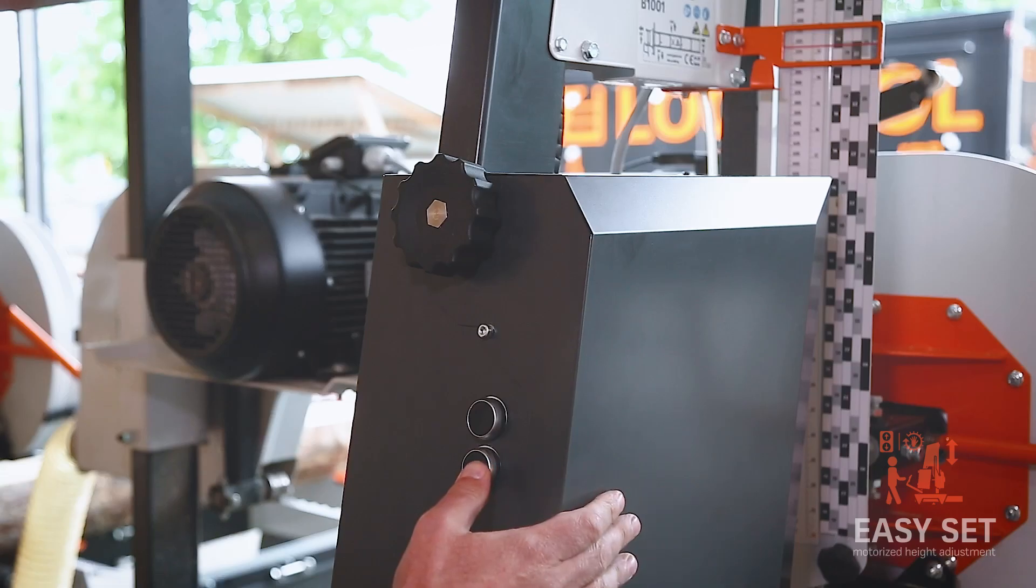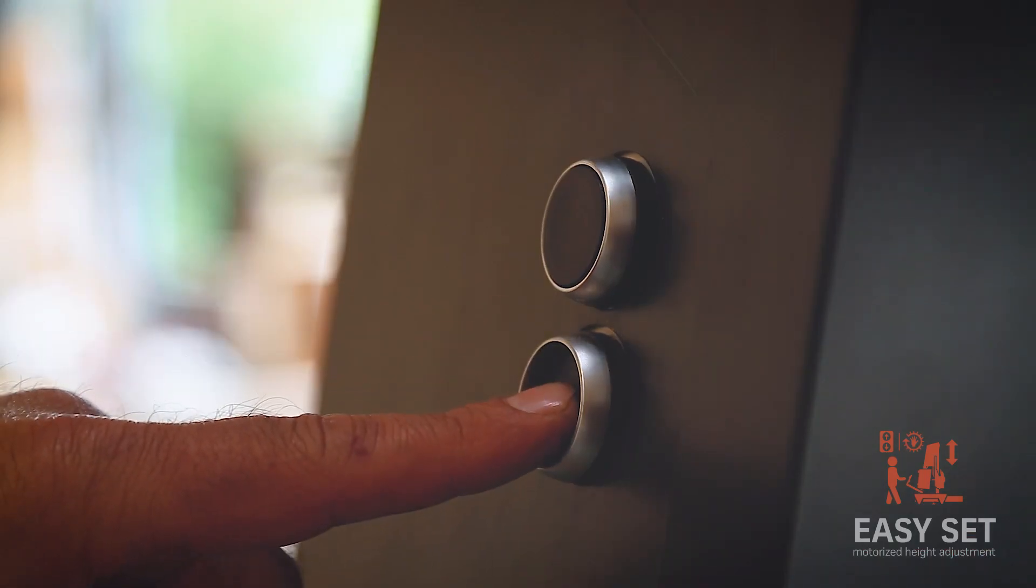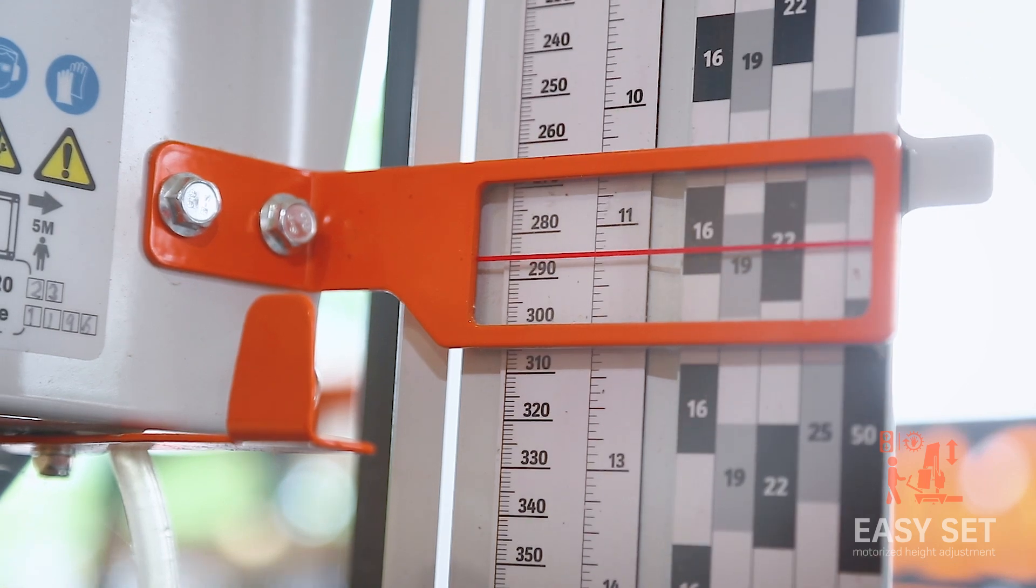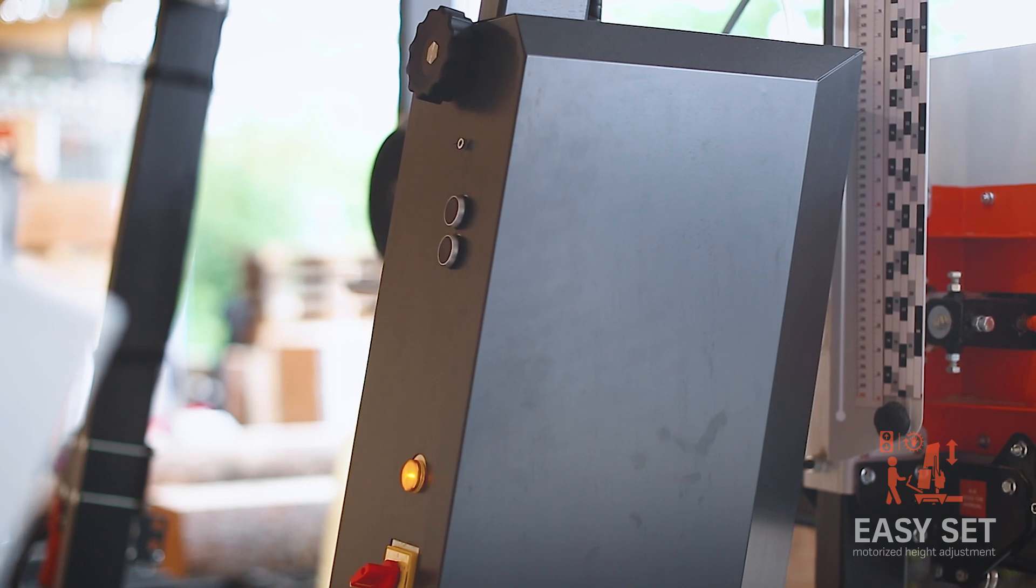In this black box you have the motors and some electric parts that will be used for the Computer Setworks also. So this is the start for the Pro Set, our Easy Set.